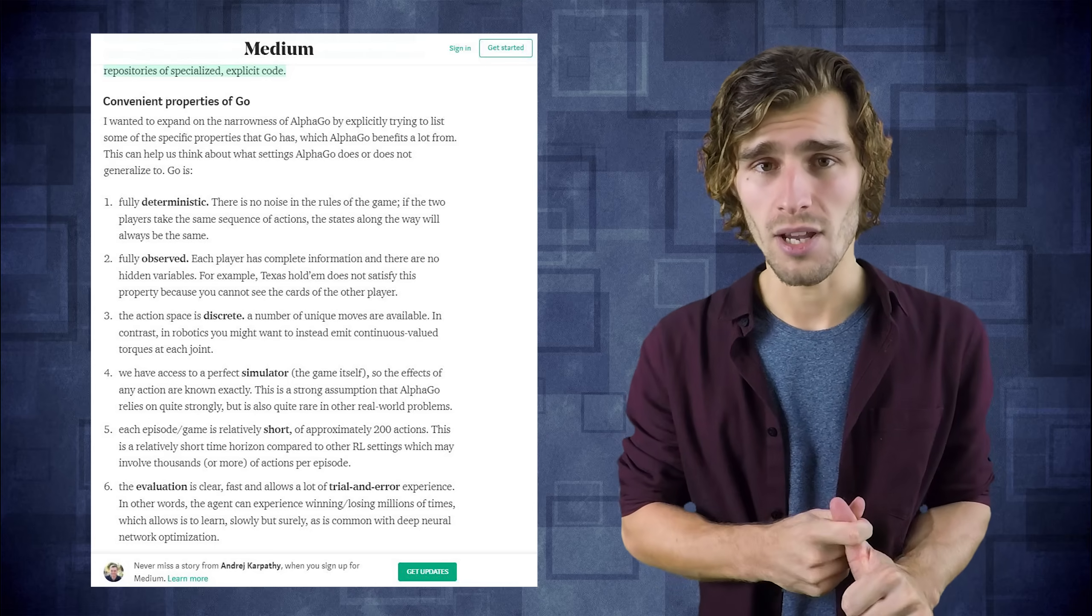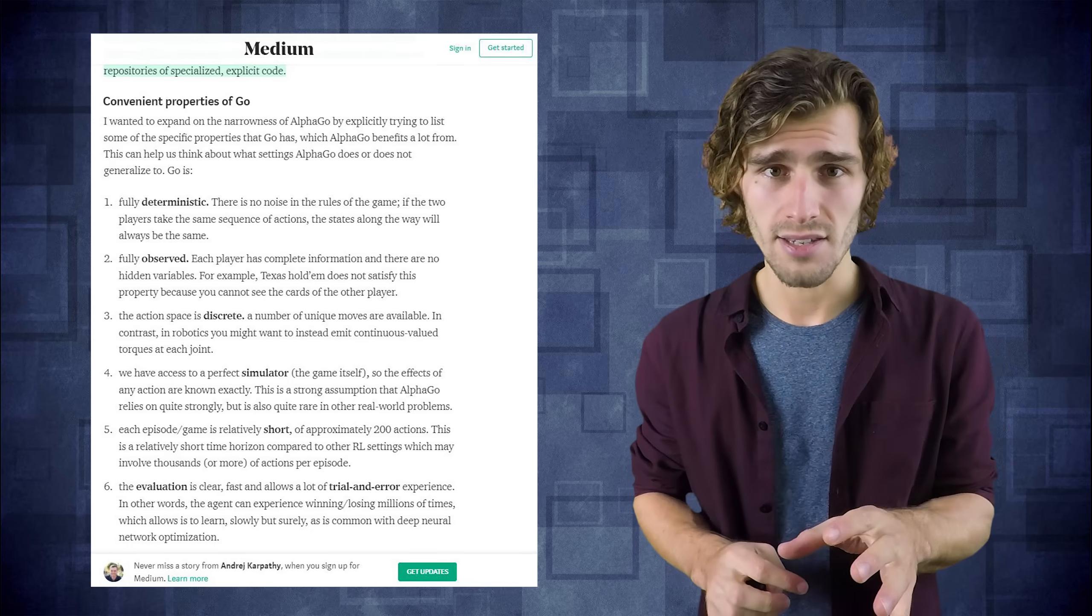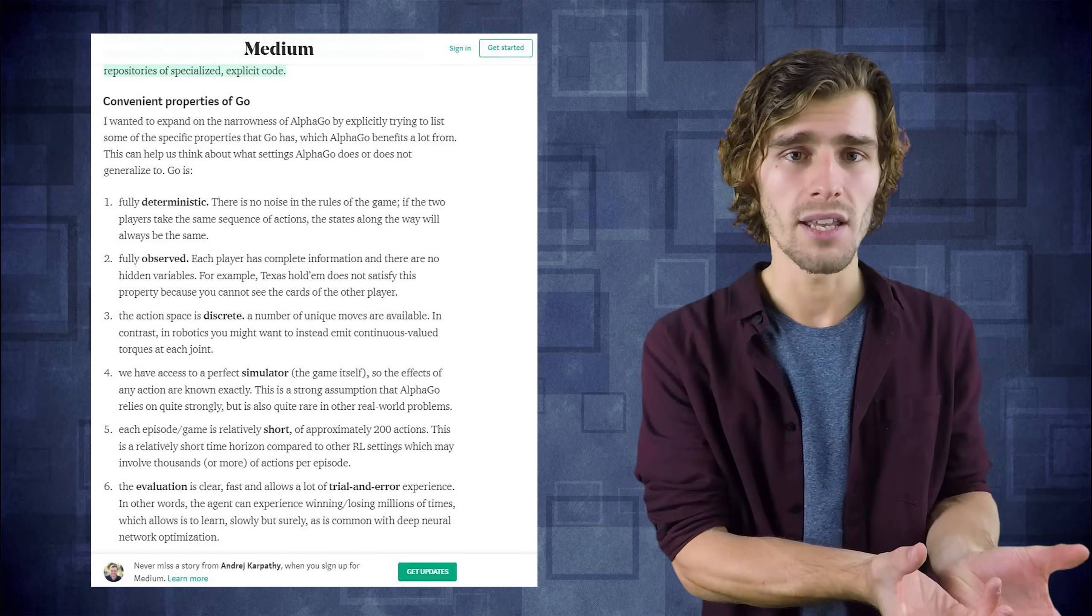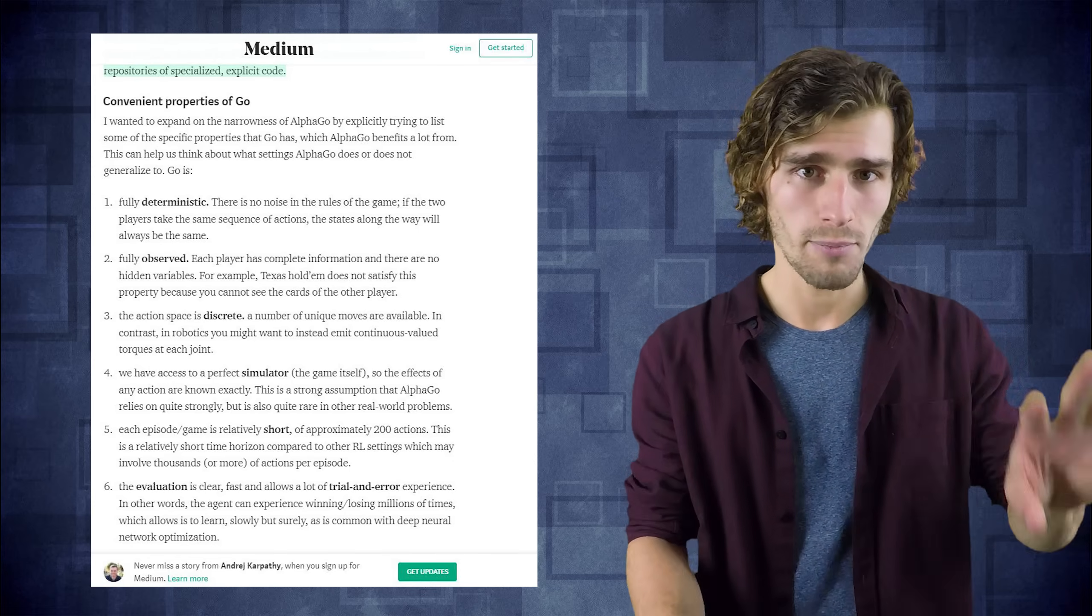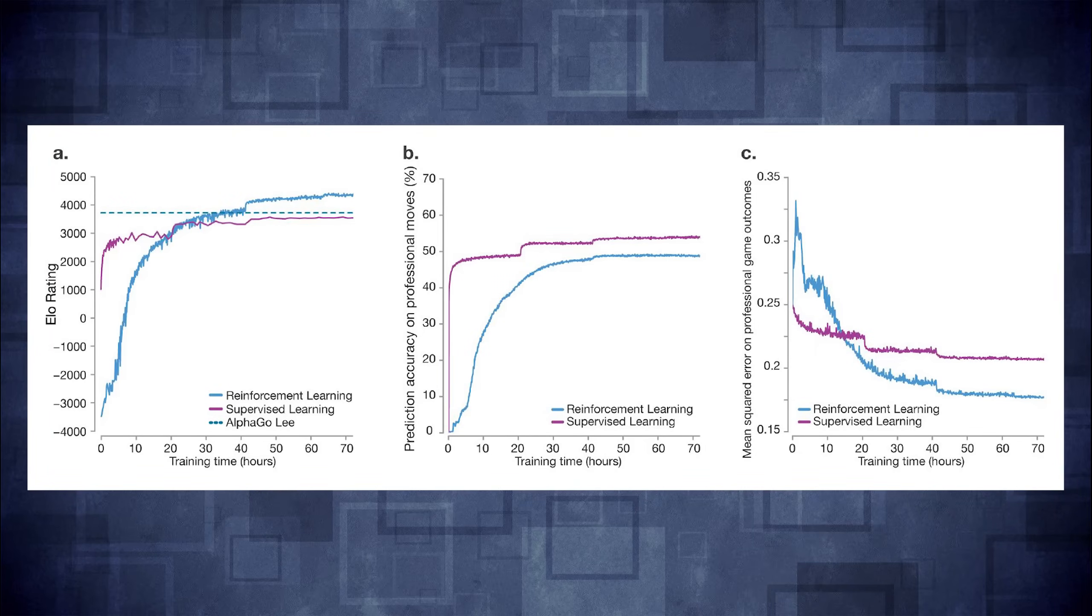An additional note to that is that this procedure is very specific to a game like Go, where you have perfect information games, and you also have a perfect simulator. Because in this case, in the game of Go, you can select a potential move, and then you can simulate everything that would happen down that path in the search tree. But in the real world, that is usually not possible. So having a perfect simulator in this case is a very, very big advantage that you normally wouldn't have in the real world.